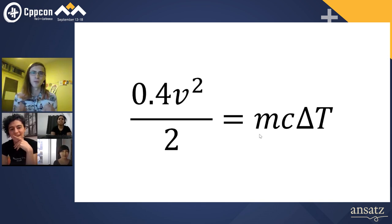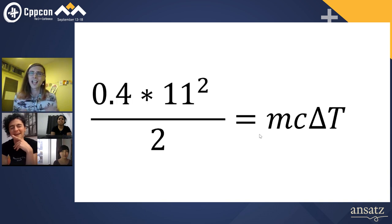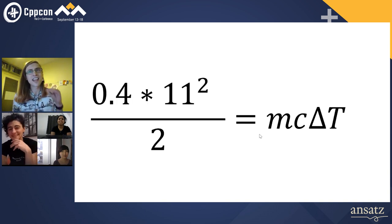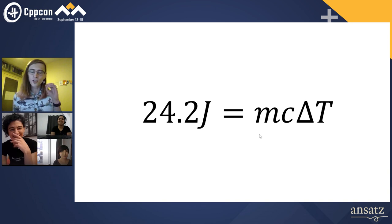If the average human hand weighs 0.4 kilograms and the average human slap is 11 meters per second, then the average human slap is going to generate 24.2 joules of energy.